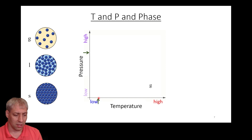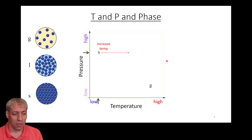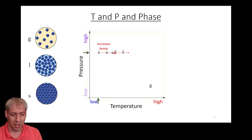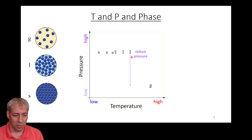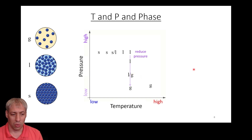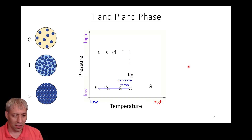We pick another point at low temperature, high pressure, and we find out that's a solid. We can do this over and over again — change the temperature, see how the phase changes: solid, solid, then solid and liquid simultaneously, then just liquid. We can also change the pressure: starting as a liquid, reducing pressure, still a liquid, then liquid and gas, then only gas. We keep doing this across all different temperature and pressure combinations.